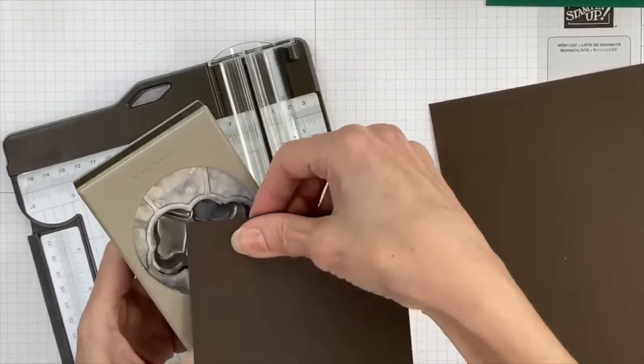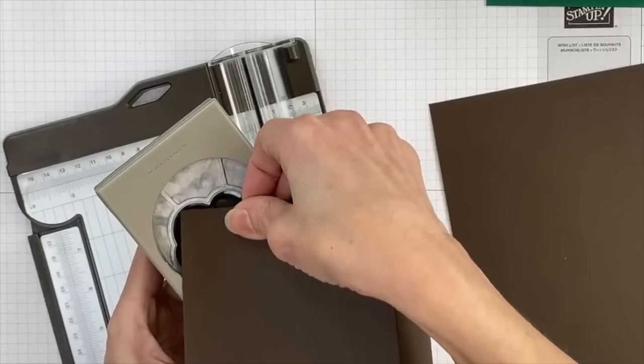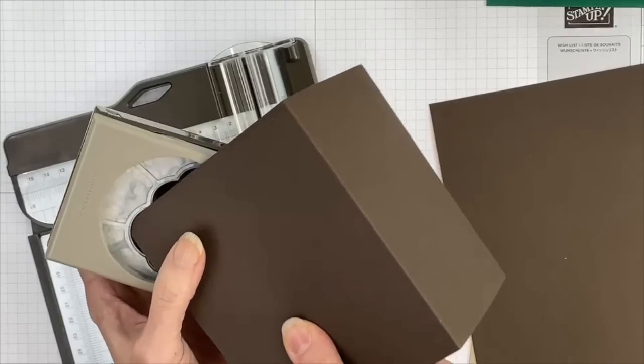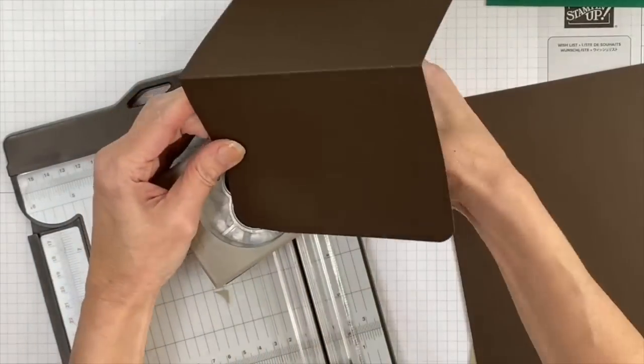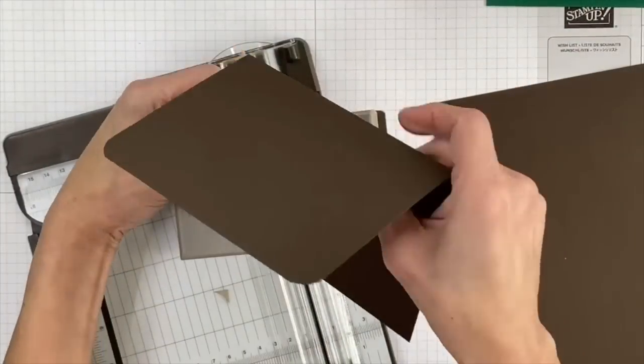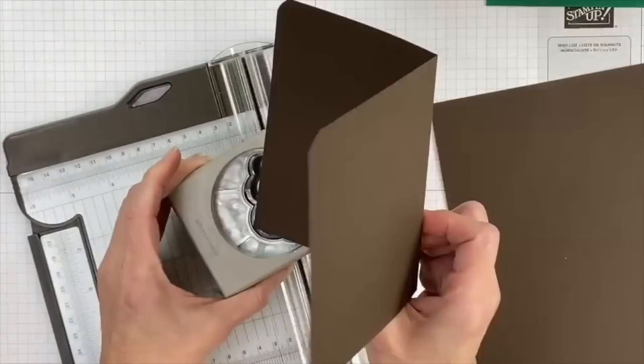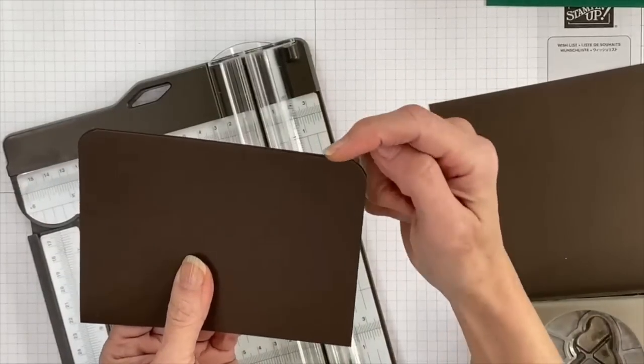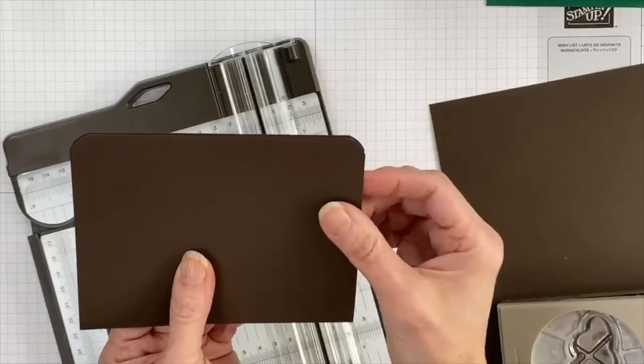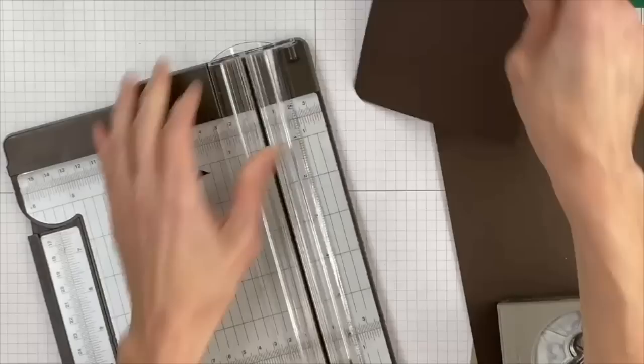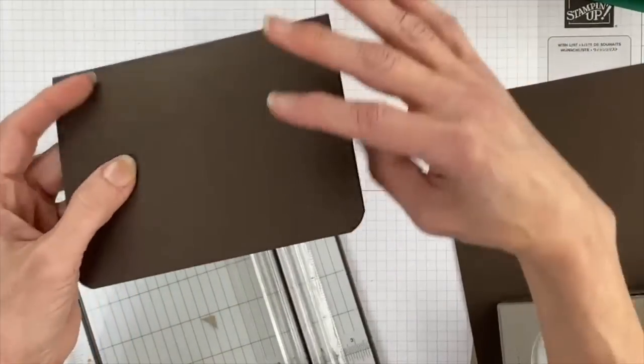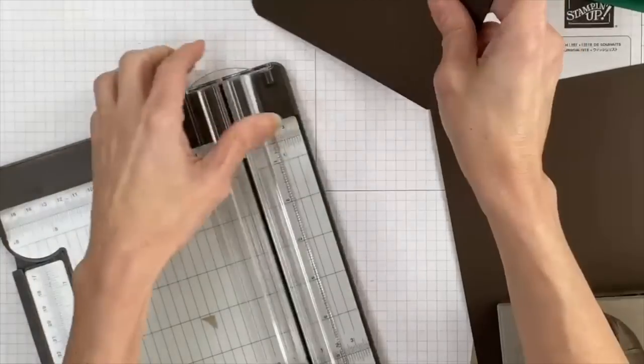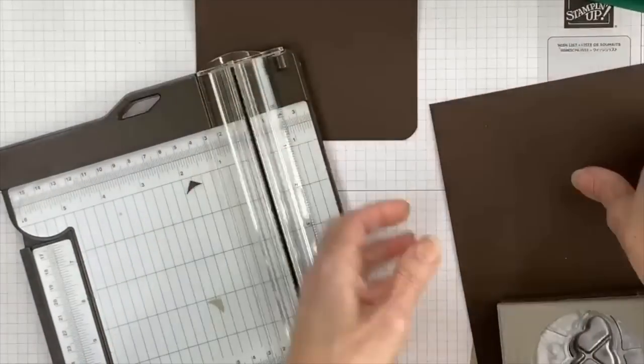Stampin' Up! doesn't currently sell corner rounder punches, but you can do the same effect by just using a punch that has a rounded corner on it. And then if you need to, you can come in and just use your trimmer to try to even things up, but mine looks pretty good. And I'm choosing this side for my top because on the bottom side, I can see both layers of cardstock. You want to have that on the bottom.